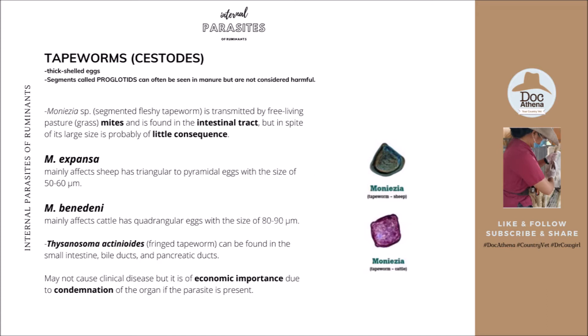Another tapeworm reported is Thysanosoma actinoides, or the fringed tapeworm, found in the small intestine, bile ducts, and pancreatic ducts. These tapeworms may not cause clinical disease, but they are of economic importance due to condemnation of the organ if the parasite is present, which has an economic impact on the farmer.